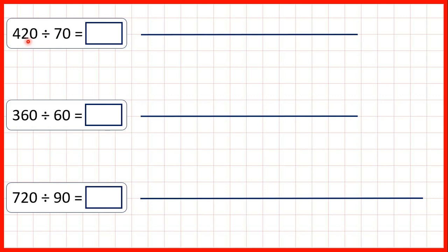So first we have 420 divided by 70. Now what we can do with division questions is cancel our end zeros. So because both numbers in the question end in a zero, we can cross out these zeros and then just answer 42 divided by 7 which is 6. So that's also the answer to 420 divided by 70.